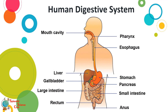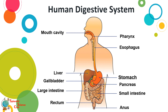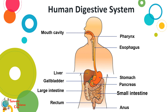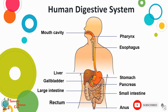Here are the main parts of our digestive system: mouth cavity, pharynx, esophagus, stomach, liver, gallbladder, pancreas, small intestine, large intestine, rectum, and anus.